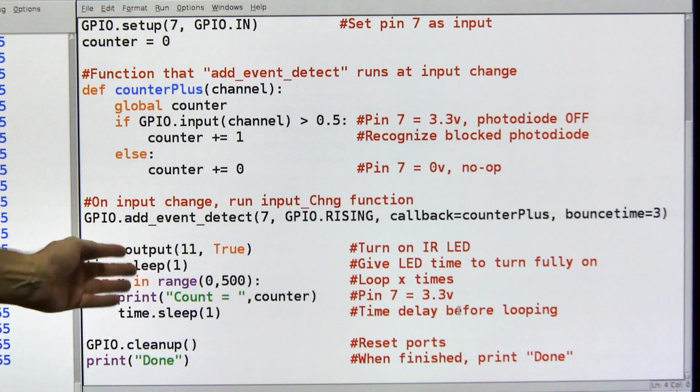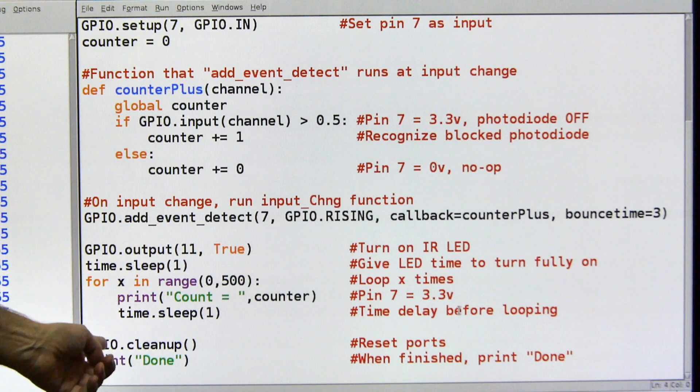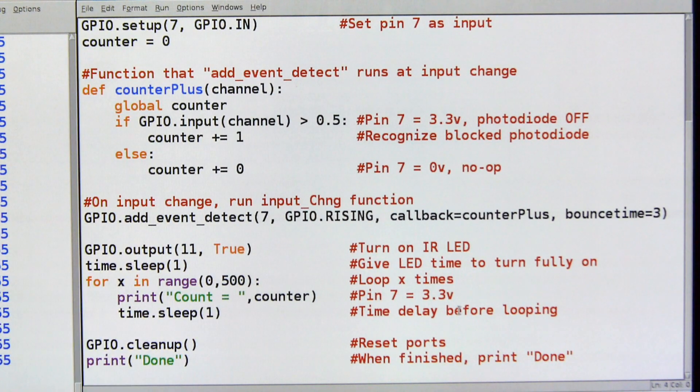I'm going to execute this 500 times in this case, you can make it again an infinite loop so it runs forever, but if you have a loop and when it's done, it'll fall out, I'll clean up my GPIO ports. In other words, I'm going to reset those ports, turn everything off, put them back to the way they were, and then I'm going to print done so I know the program is finished.